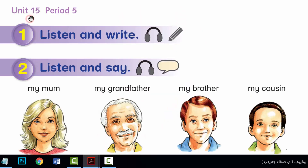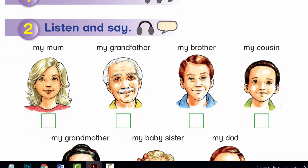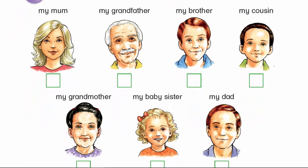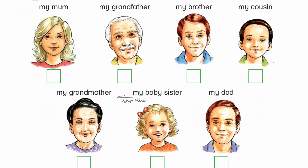Unit 15, Period 5, Activity 1. Listen and write. 1. She has black hair and green eyes.